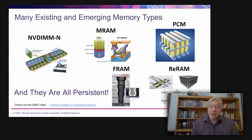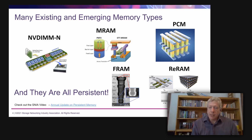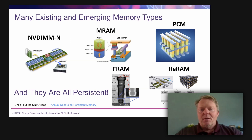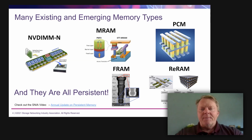Persistent memory is not a single thing — there's actually a variety of different persistence opportunities out there. The NVDIMM-N is taking off-the-shelf DRAM and flash and allowing non-volatile access at very high DRAM speeds for system acceleration — that's been a proven solution in the market. Others in the industry shown here include MRAM, FRAM, phase change, and 3D XPoint, which provide different areas of solution. MRAM in particular is in the industrial space with smaller densities, and they all have their different place in the market, with others emerging in the next few years.